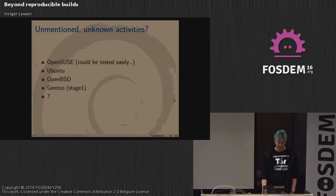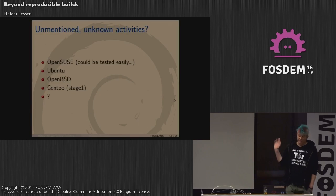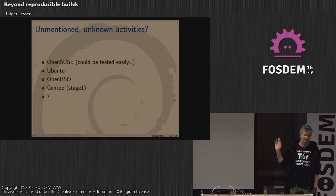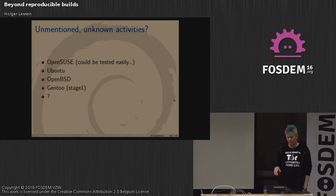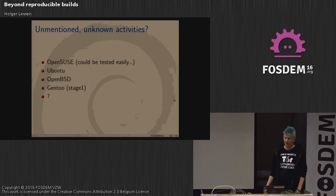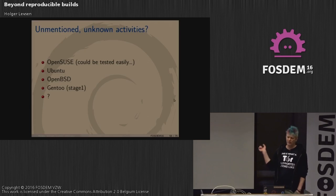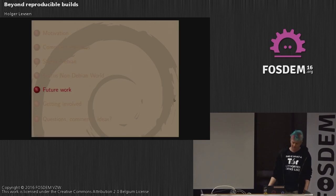OpenSUSE could be tested easily because the Fedora stuff in our framework just deals with RPM, so putting a different RPM repository in there should make it work. Ubuntu is waiting for progress in Debian. OpenBSD — I have no idea. Gentoo also releases binaries, so that would be interesting to rebuild. There's probably other software too.